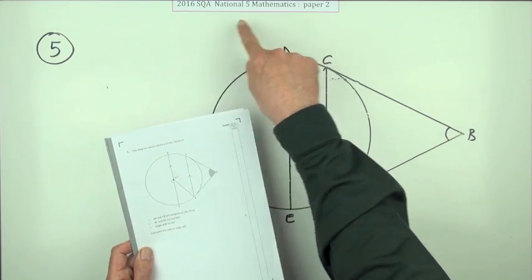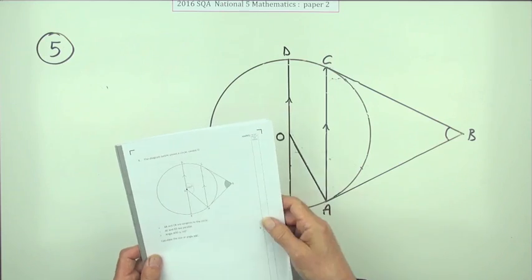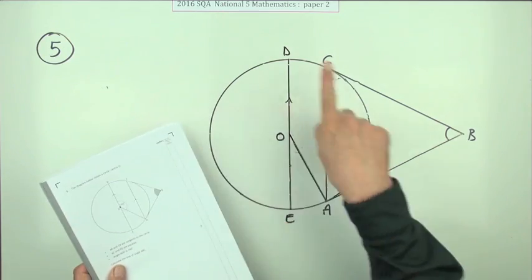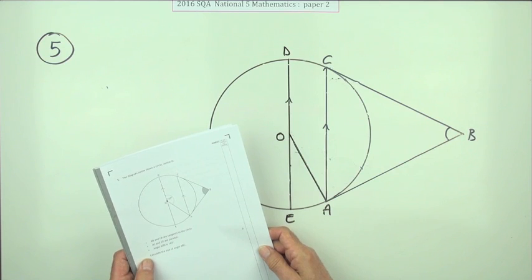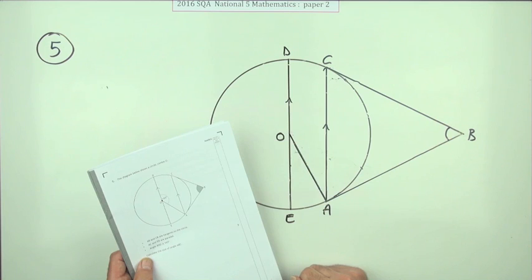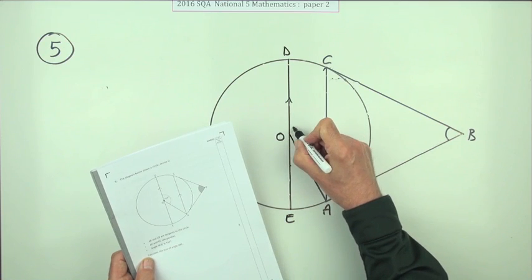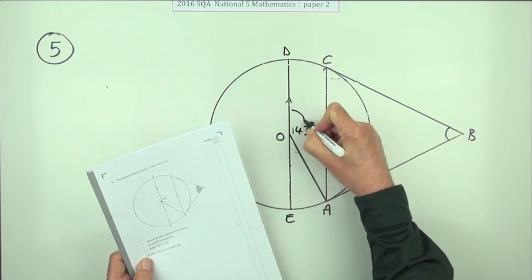Question 5 from paper 2 of the 2016 National 5. Three marks — it's an angles and circles question. It tells you that these two lines are tangents to the circle, that these two are parallel, and that this angle here is 143 degrees.